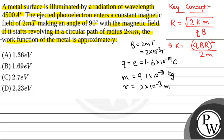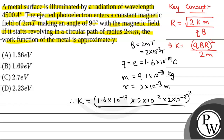We will put these values to calculate the kinetic energy. Kinetic energy equals q, that is 1.6 into 10 to the power minus 19, into b, that is 2 into 10 to the power minus 3, into r, that is 2 into 10 to the power minus 3 — whole square — divided by 2 into m, that is 9.1 into 10 to the power minus 31 kg.